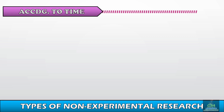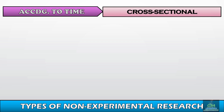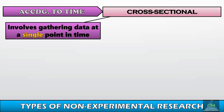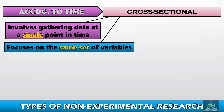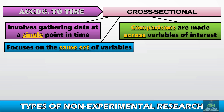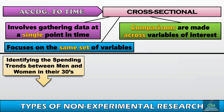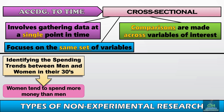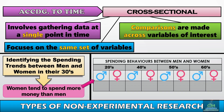We now focus on non-experimental research designs according to time dimension, starting with cross-sectional research. Cross-sectional research involves gathering data at a single point in time, focusing on the same set of variables, after which comparisons are made across variables of interest. For example, a researcher wants to identify spending trends between men and women in their 30s. The findings conclude that women tend to spend more money than men, and the researcher then compares this data across other age bracket variables to identify similarities or differences in trends.